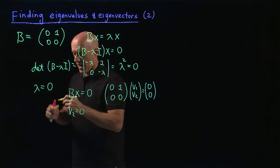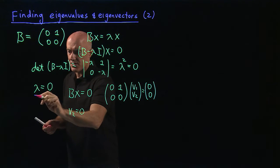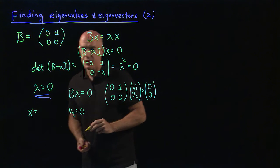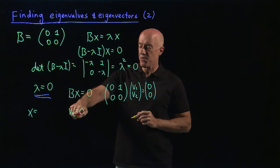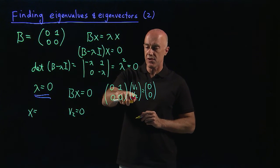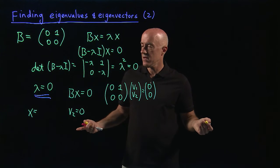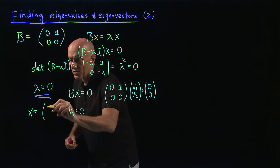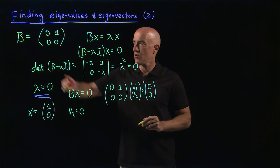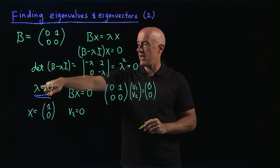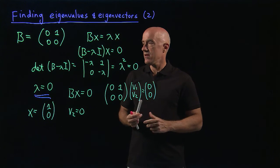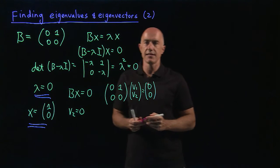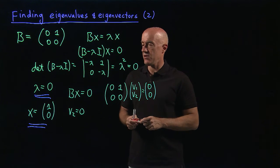The first row gives 0 times V1 plus V2 equals 0, so V2 equals 0. Our eigenvalue is lambda equals 0, and the associated eigenvector has V2 equal to 0. V1 can be anything, so we choose it to be 1, giving us the single eigenvector [1, 0]. When you multiply B by x you get 0. This is an example of a 2 by 2 matrix that has only a single eigenvalue and a single eigenvector.